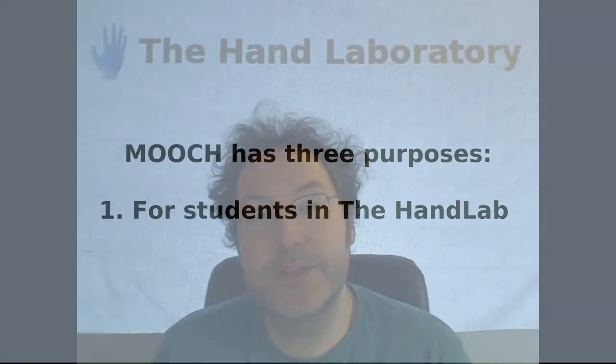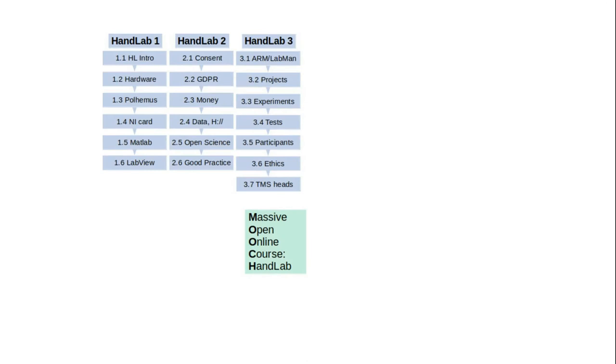The first purpose of Mooch is to give students who come to work in the laboratory an online video resource to help support their learning and guide their research. Hopefully this will help them get to know what goes on in the lab more generally, how to use the equipment, and how they can contribute during their own project. The first 20 videos are mostly for Hand Lab members. They're in three chapters, named HL 1.1, HL 1.2, HL 1.3, then the second chapter HL 2.1 and so on, and the third chapter HL 3.1.